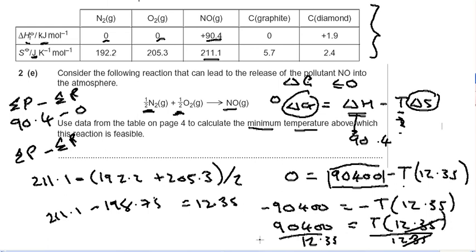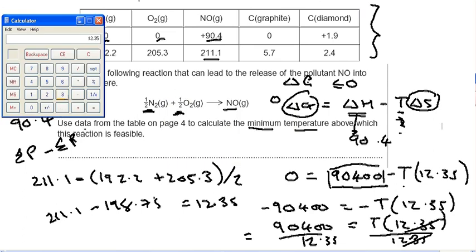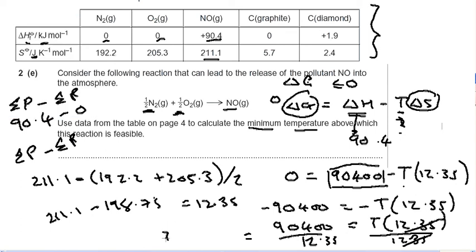And this should give me... Let's get my fancy calculator up. Clear that. 90,400 divided by 12.35. Equals. There we go. You can see from the big screen I've got a crazy number. So I'm going to round it up. I've got 7,319.8, 7,319.8 Kelvin.